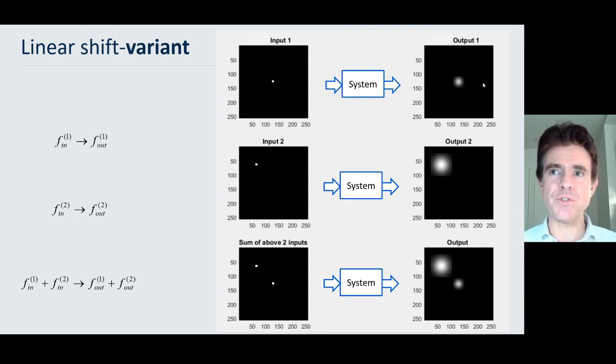Now, the point is that whilst this is now a different response according to location, so it's shift variant, it's still linear. And so therefore, if we put input 1 and input 2 in together to have those two points, then the output is still the sum of those individual outputs. And so we get the kind of good quality in the middle and the bad quality towards the edge, but just simply added together. So still a linear system, but now explicitly a shift variant linear system.